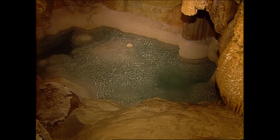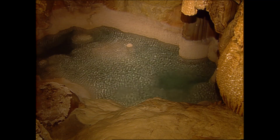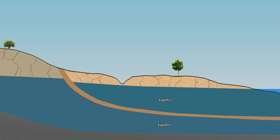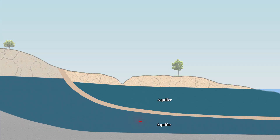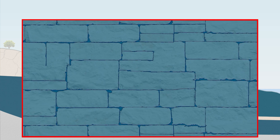Aquifers are rarely underground lakes like you might see in a cave. They are typically rock formations that are mostly solid, but like sponges they have interconnected fissures and pore spaces that hold water and allow it to move within the formation. An aquifer is best defined as a layer of saturated rock and the water in its pores.